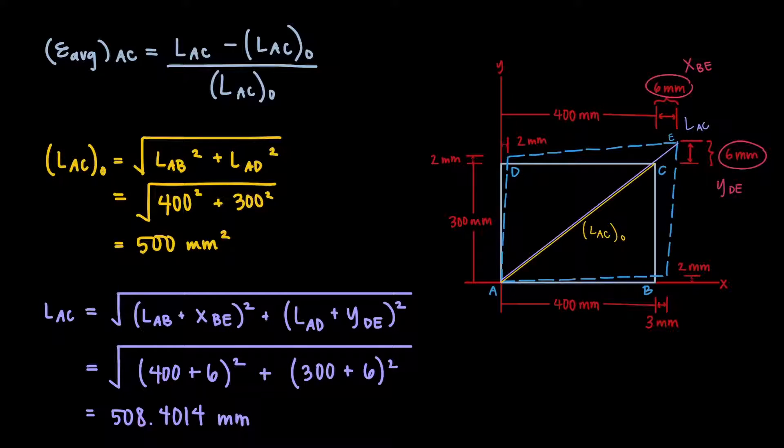We'll plug all of that into the Pythagorean theorem equation, where A squared is now L_AB plus x_BE. That's the total horizontal distance between points A and E. And then we'll add that to L_AD plus y_DE, which is B squared. That's the total vertical distance between points A and E. We'll square both of those quantities to produce the new deformed length of L_AC, and that'll be 508.4 millimeters.